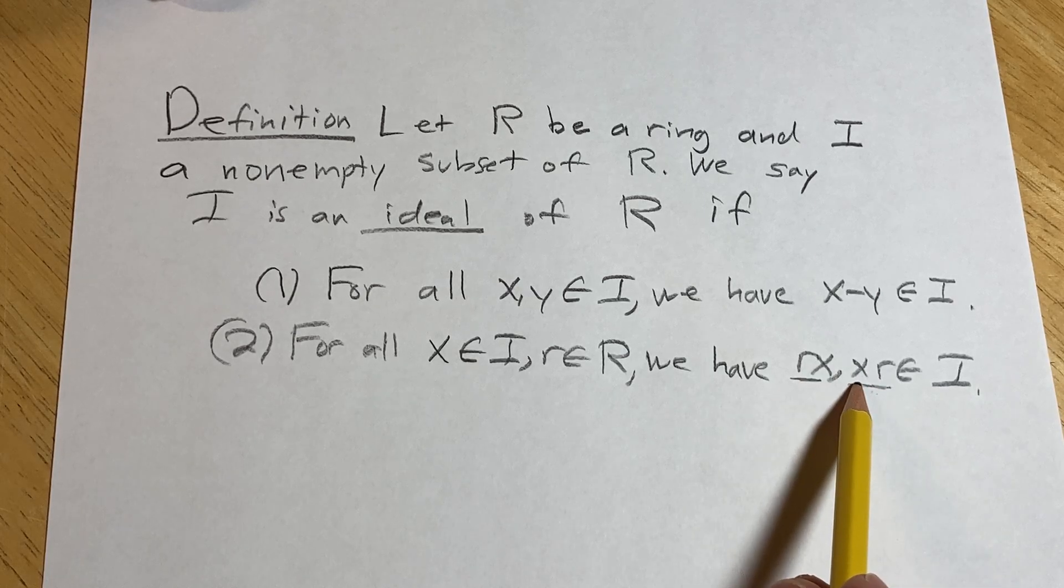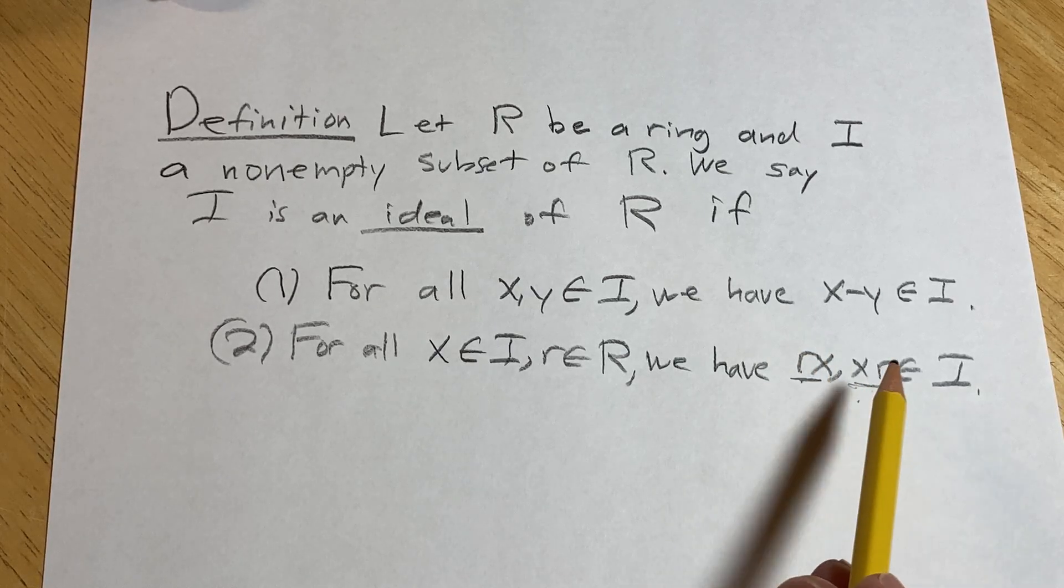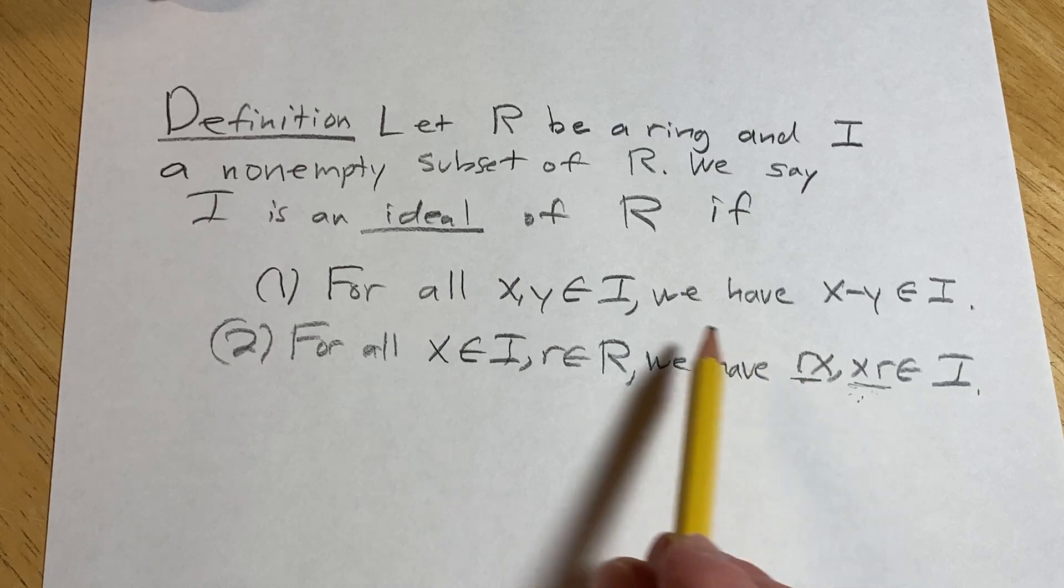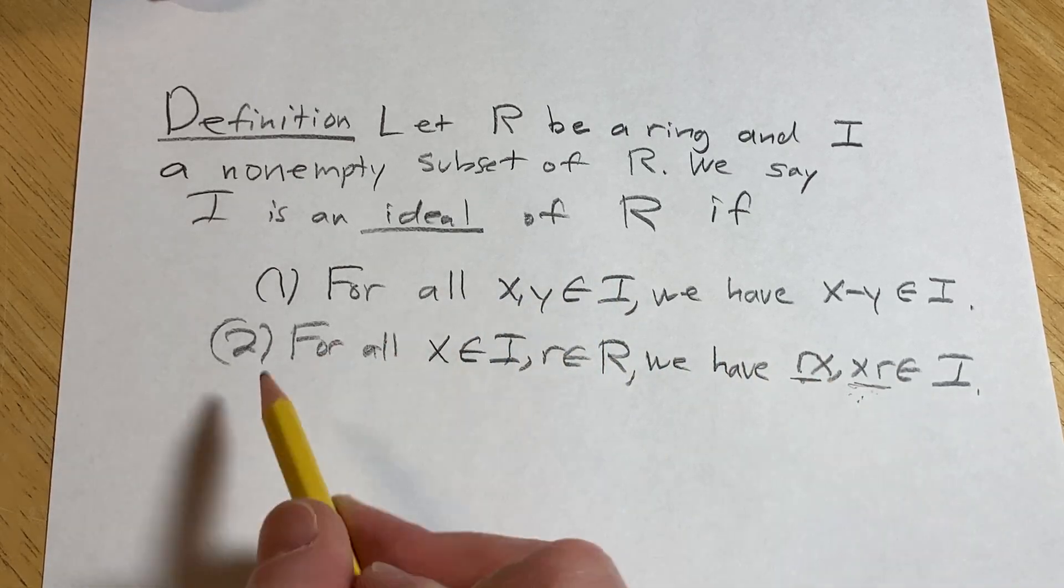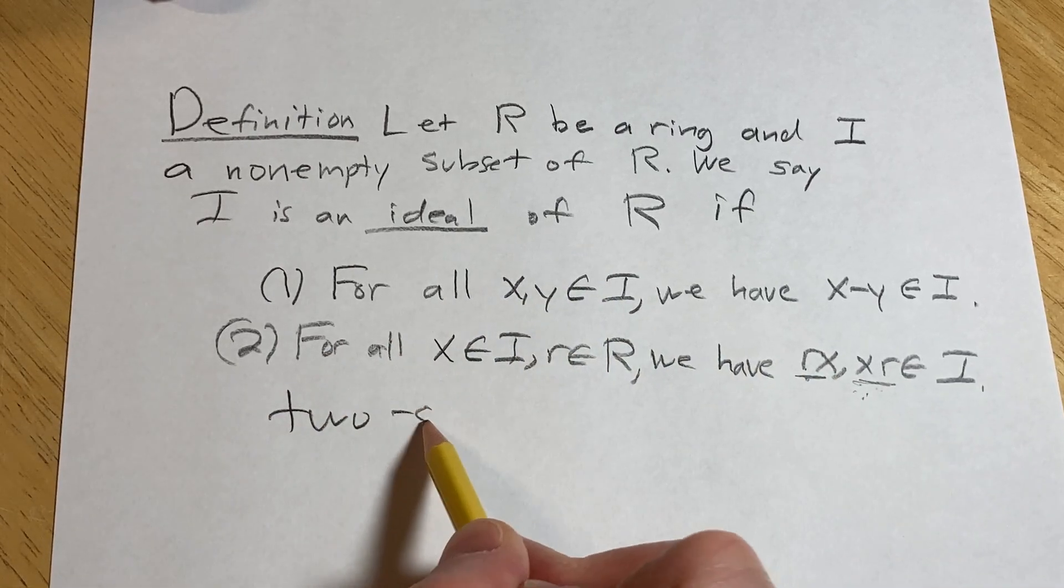This is the only thing that changes, right? So in a left ideal you have this condition, in a right ideal you have this condition. And an ideal, or also called a two-sided ideal, we have both conditions. This is also called a two-sided ideal.